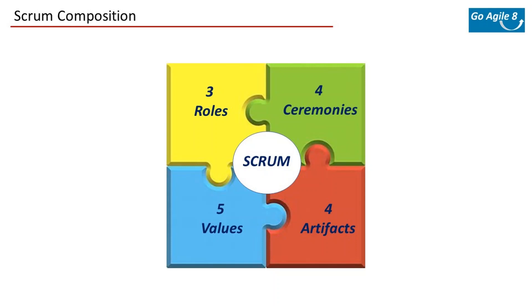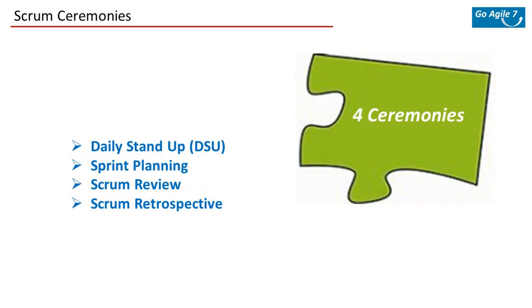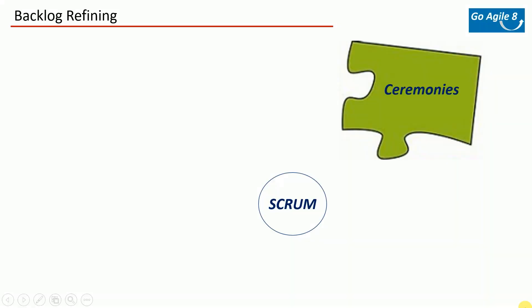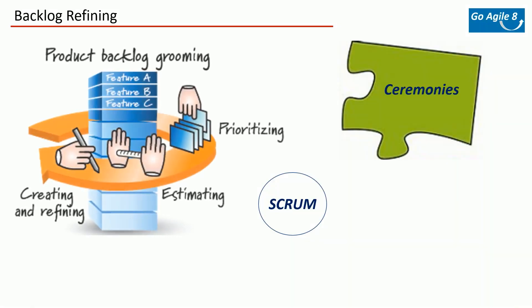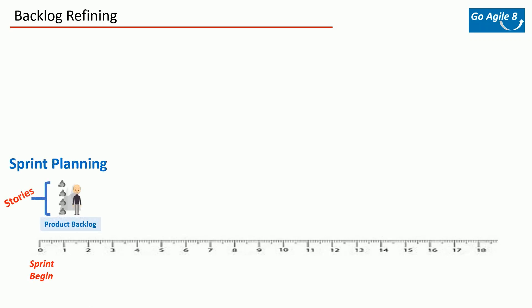Back to scrum. In the last session we covered scrum roles and scrum ceremonies. There are three scrum roles: scrum master, product owner, and developers. In scrum ceremonies we looked at four ceremonies: daily stand-up, sprint planning, review, and retrospective. There is one more ceremony called backlog refining that I didn't cover last time, because it's not an official scrum ceremony — but most teams carry it out and it's a useful one.